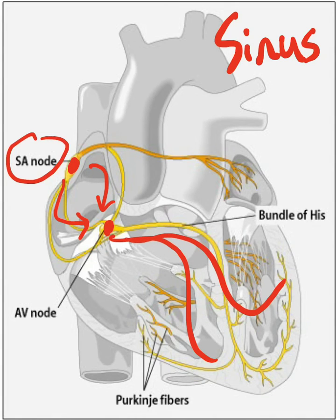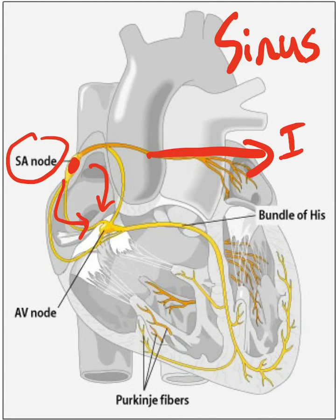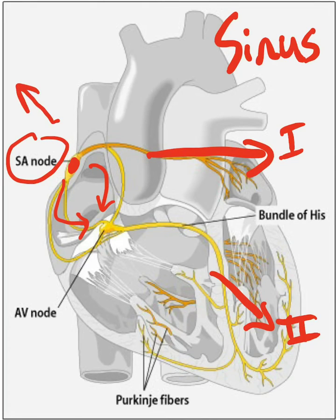If an attending asks you what a sinus rhythm would look like, remember that you have Lead 1 over here, Lead 2 towards this side, and Lead AVR on the opposite side.